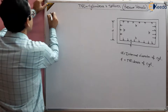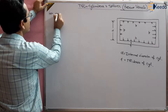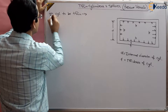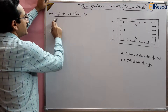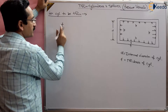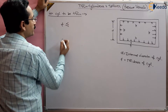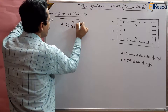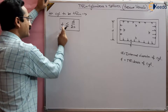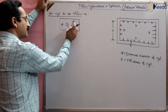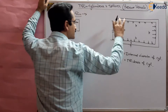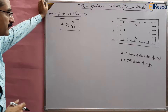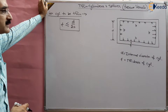Why are we calling it a thin cylinder? For a cylinder to be thin, the thickness of the cylinder should be less than or equal to d by 20. This is generally the dimension we use: if the thickness is very small — less than d/20, where d is the diameter of the cylinder — then we call the cylinders thin cylinders.